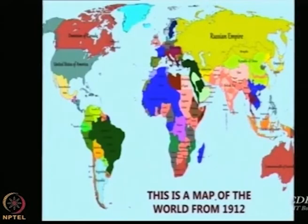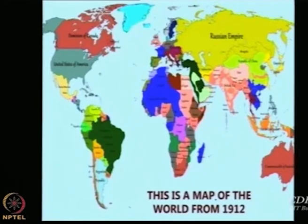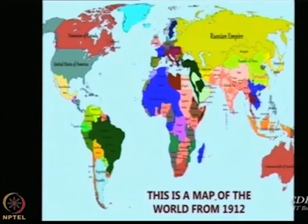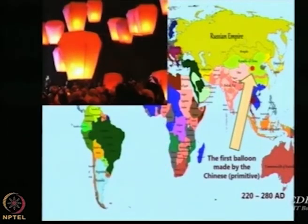We will trace the historical developments of LTA systems using a map of the world, which will change slightly as history progresses. Broadly speaking, this is the kind of map from approximately 1912 that we use for our explanation. You can see there is British Raj in India, so Pakistan, Bangladesh, Sri Lanka and India are all under the British Raj. This primitive period spans from around 220 AD to 280 AD.